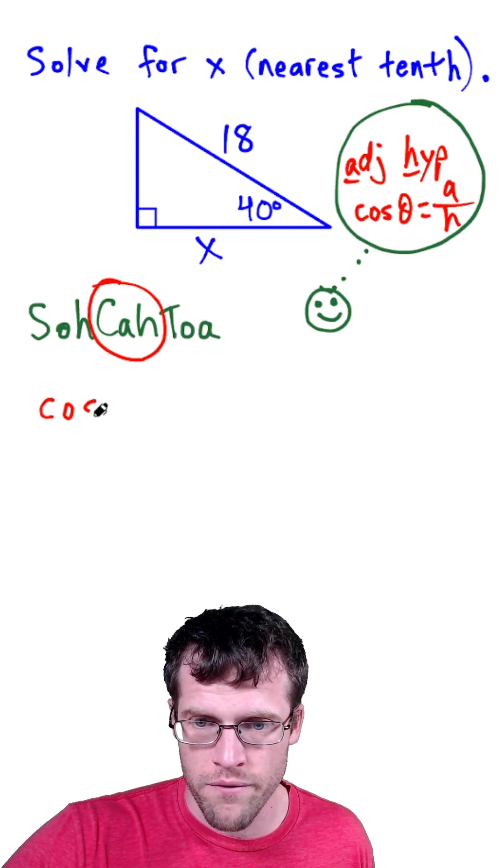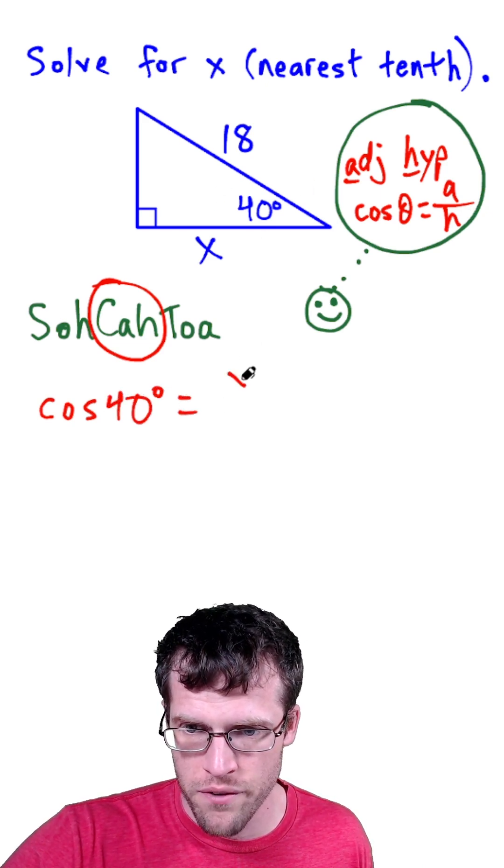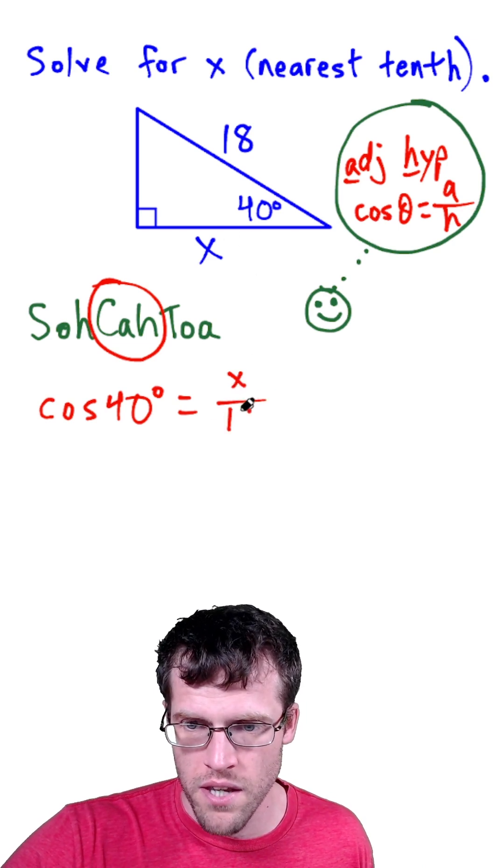So now we have cosine of 40 degrees is equal to, and now we set up the ratio of the side adjacent to the 40-degree angle is x over the hypotenuse is 18.